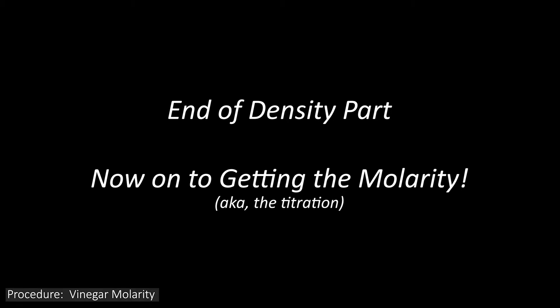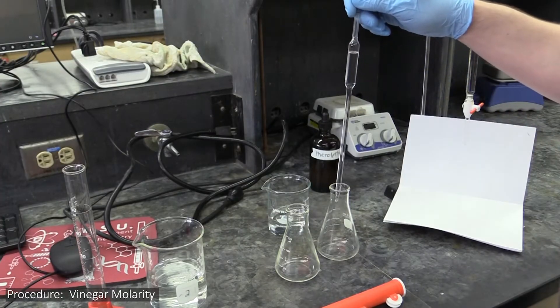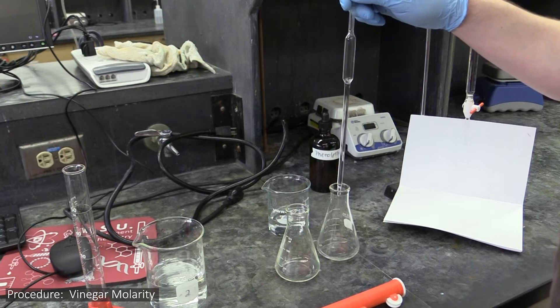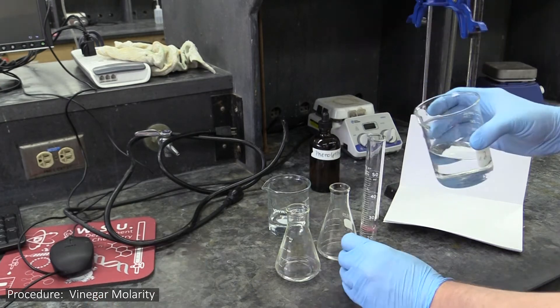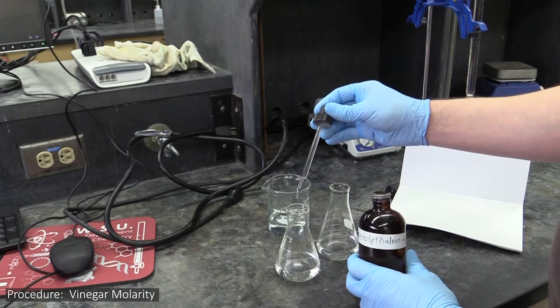Now let's look at what needs to happen to determine its molarity. To determine the vinegar's molarity, you will titrate it with sodium hydroxide. This begins with pipetting samples of it into Erlenmeyer flasks, followed by some DI water, and two or three drops of phenolphthalein indicator.